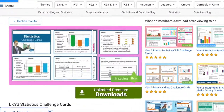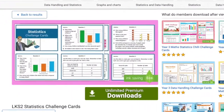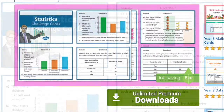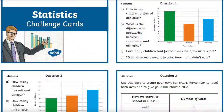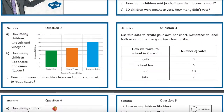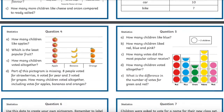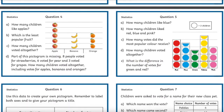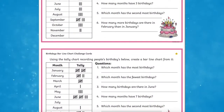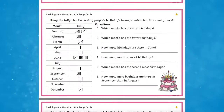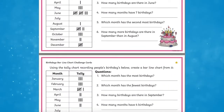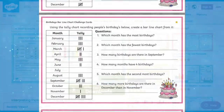Another resource that you may want to add to your working wall is the Lower Key Stage 2 Statistics Challenge Cards. Challenge children to complete these statistics-inspired challenge cards. Why not add one of these to your working wall each day, make them part of your morning starter activity, or even as a great extension to your lessons?